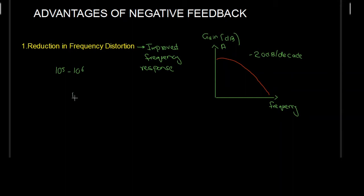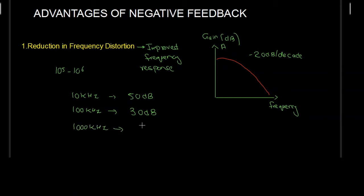For example, if I have an open loop gain of 50 dB at 10 kHz, when I increase the frequency by a decade to 100 kHz, the gain is going to decrease by 20 dB, giving a gain of 30 dB at 100 kHz. Similarly, increasing by another decade to 1 MHz, the gain drops again by 20 dB to 10 dB. So with increasing frequency, the gain is decreasing.